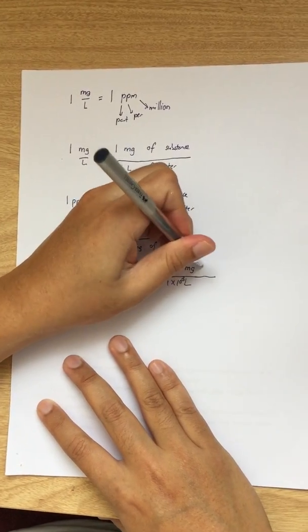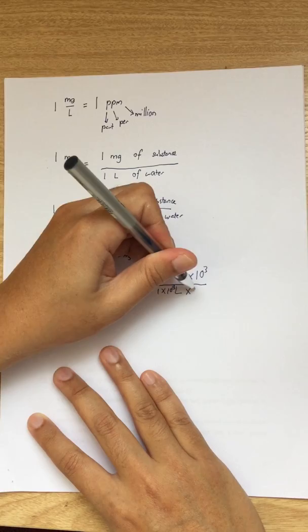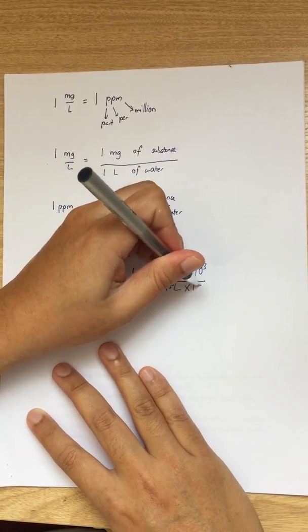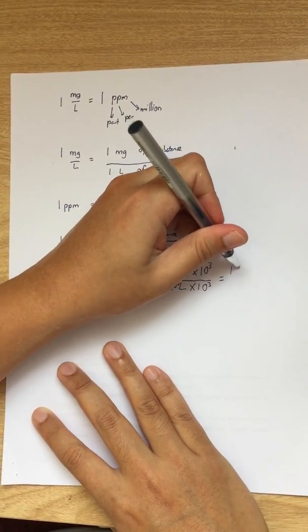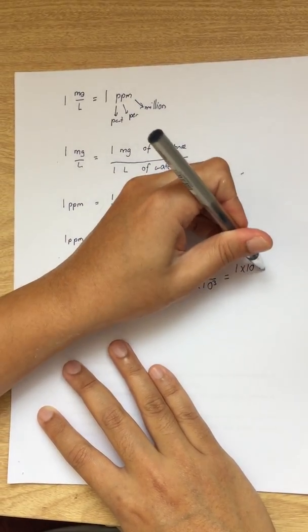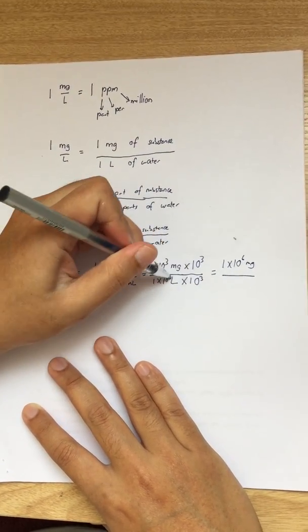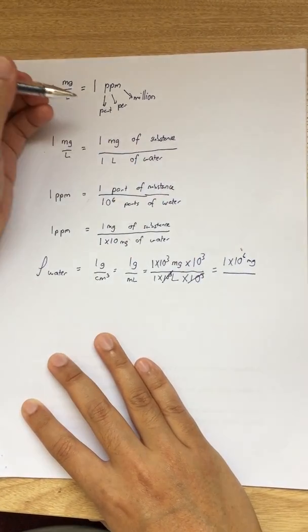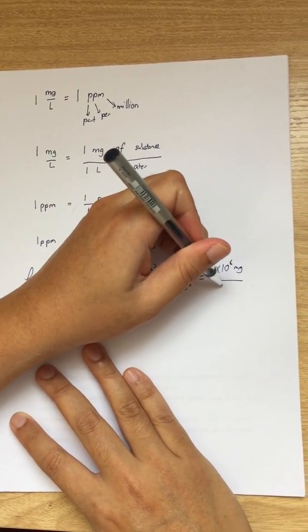If I like to times the numerator with 1,000, so I also have to time the denominator with 1,000. So that will end up to be 1,000,000 milligram divided by, this is minus 3, this is 3, that means we can cancel this thing out. So we end up with 1,000,000 milligram per liter.